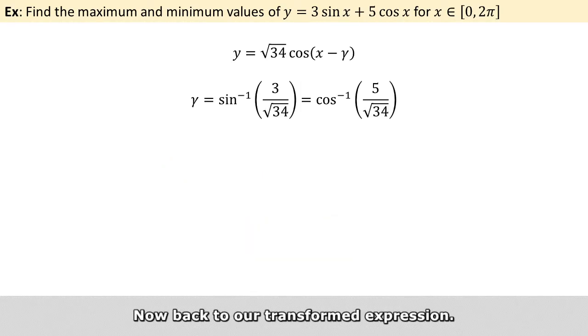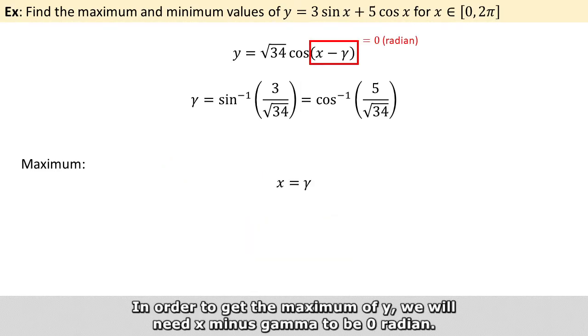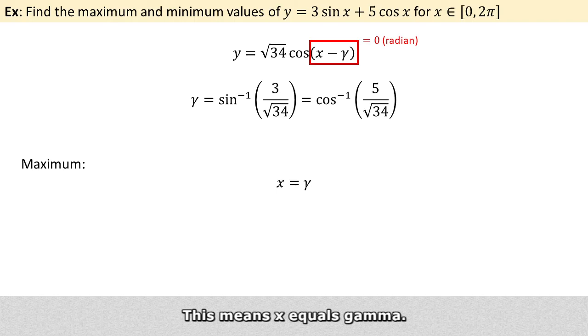Now back to our transformed expression. In order to get a maximum of y, we will need x minus gamma to be 0 radians. This means x equals gamma.